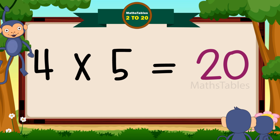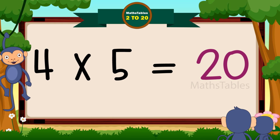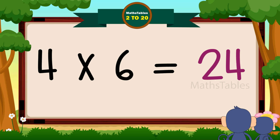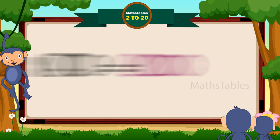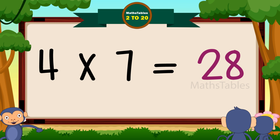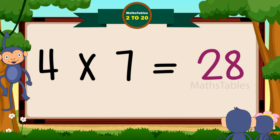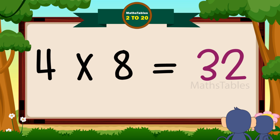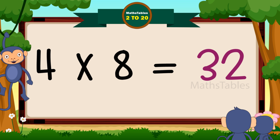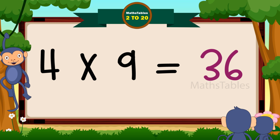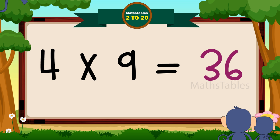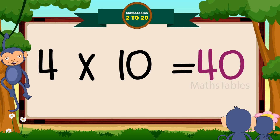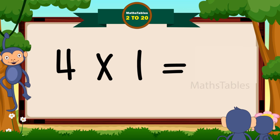Four fives are twenty. Four fives are twenty. Four sixes are twenty-four. Four sixes are twenty-four. Four sevens are twenty-eight. Four sevens are twenty-eight. Four eights are thirty-two. Four eights are thirty-two. Four nines are thirty-six. Four nines are thirty-six. Four tens are forty. Four tens are forty.